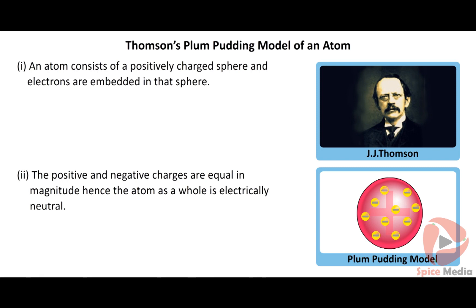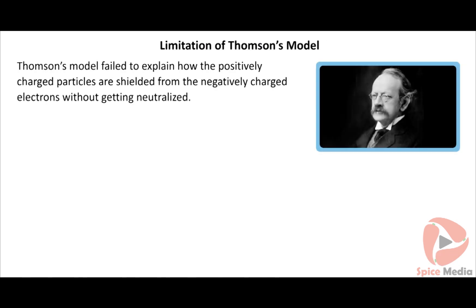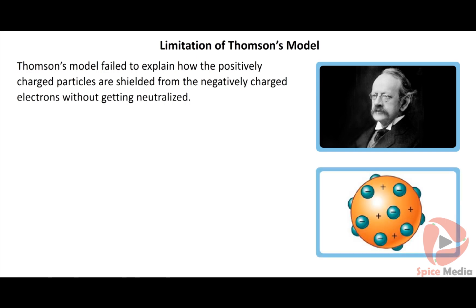Thompson's model of an atom is popularly known as the plum pudding model. Limitation: Thompson's model successfully explained the electrical neutrality of an atom; however, it failed to explain how the positively charged sphere is shielded from the negatively charged electrons without becoming neutral.